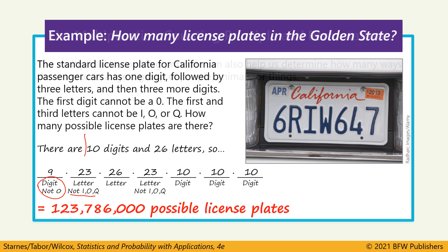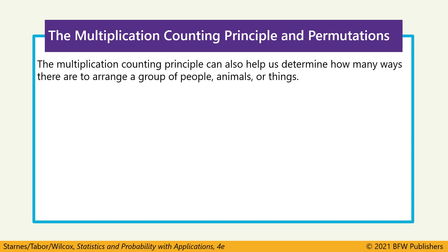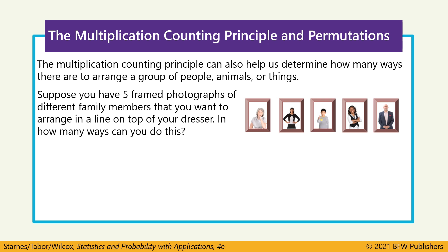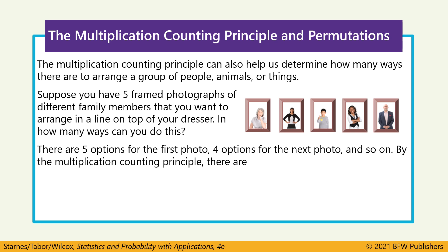This basic premise can also help us determine how many different arrangements we can have from a group. Say we have five photographs of different family members we want to arrange in a line on top of our dresser. For the first photo there are five options, then four options for the next, and so on. So we do five times four times three times two times one — 120 different photo arrangements.